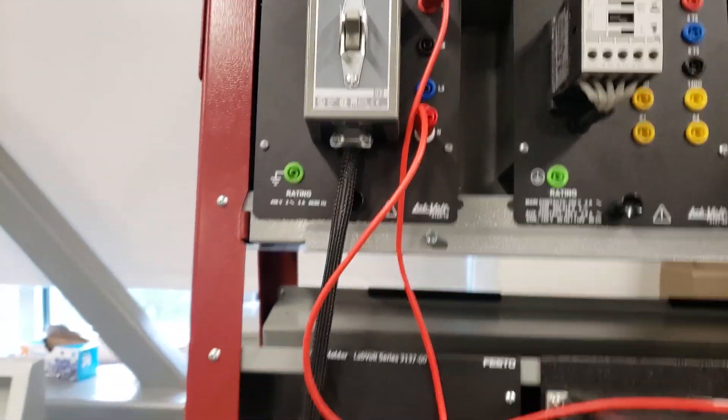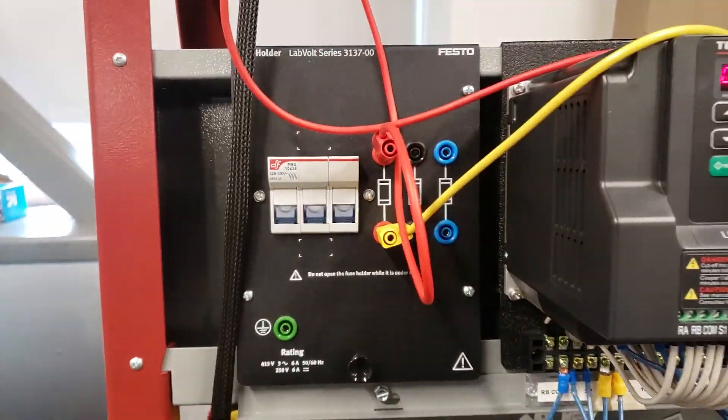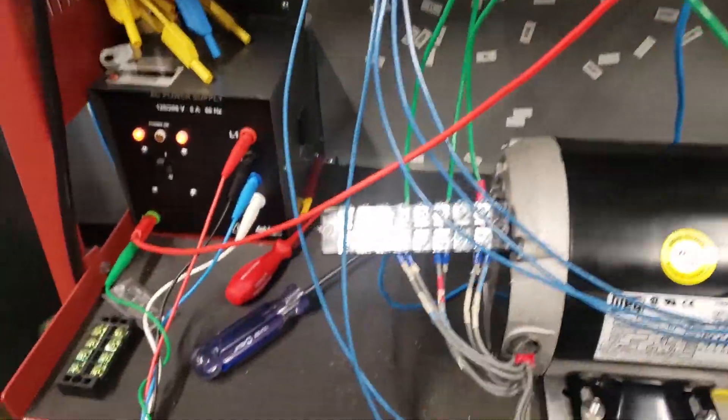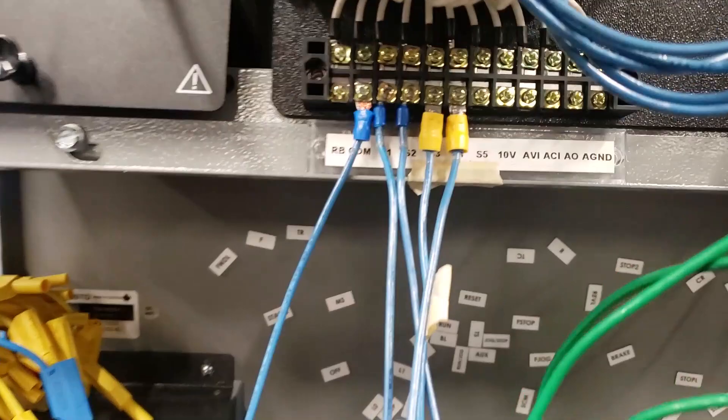We have our power switches to fuse box to VFD. From the VFD, we go down to the motor, and we have two buttons.